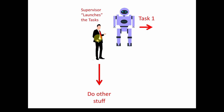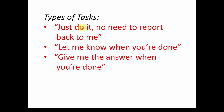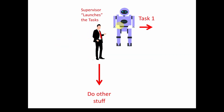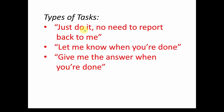There are multiple ways for this to work. One type of task is just: hey robot, go do it, you don't need to report back to me. For example, maybe the supervisor just wants the robot to go open the door so the shipper can bring in boxes. Just go open the door — no feedback needed, just do it. I'm going to go off and do other stuff. So one type of task is just go do it, no need to report back.